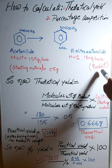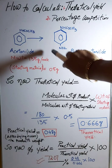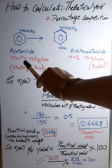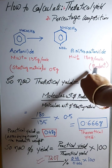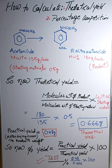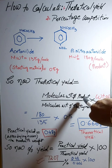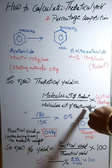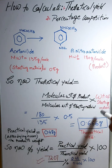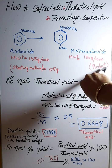I hope you all know how to calculate the molecular weight of any compound; if not, I can explain in another video. When we weighed the starting material, it was about 0.5 grams. The formula for theoretical yield is: theoretical yield equals molecular weight of the product divided by molecular weight of the starting material, multiplied by the weight of the starting material.